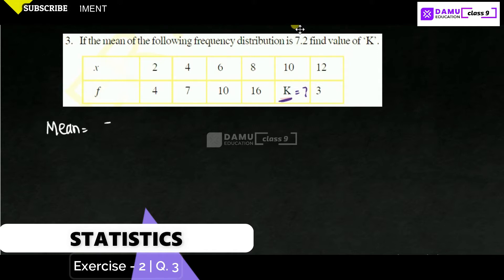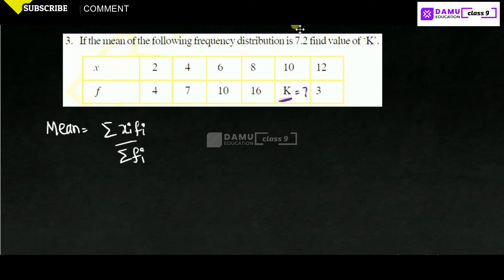Mean will be equal to summation of xi fi by summation of fi. What is summation of xi into fi? This is a summation quantity and this is frequency, number of things that exist. This product of all the sums, then we are going to get this value.